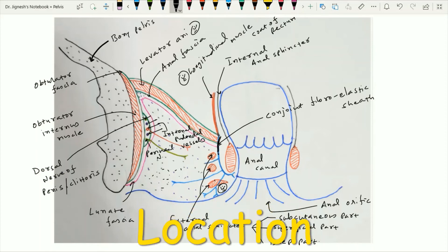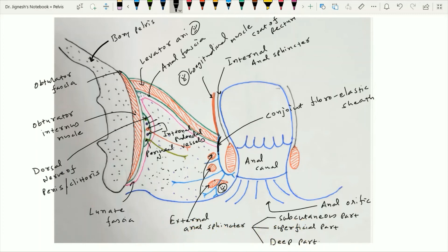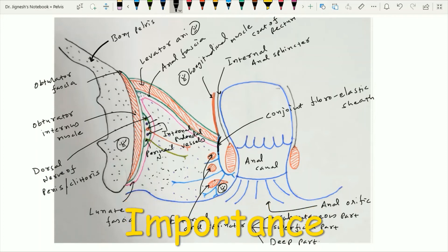The ischiorectal fossa is the space on each side of the anal canal between the inferior surface of the pelvic diaphragm and the pelvic surface of the ischium. It is filled with fat and acts as an elastic cushion to allow the expansion of the rectum and anal canal during defecation.